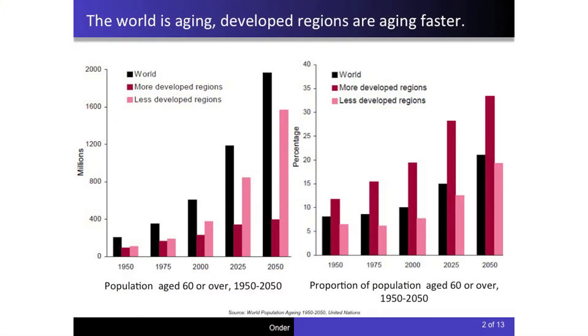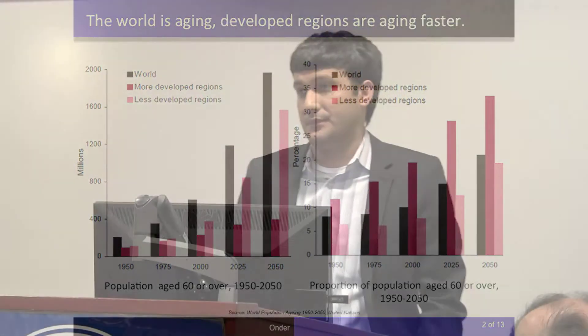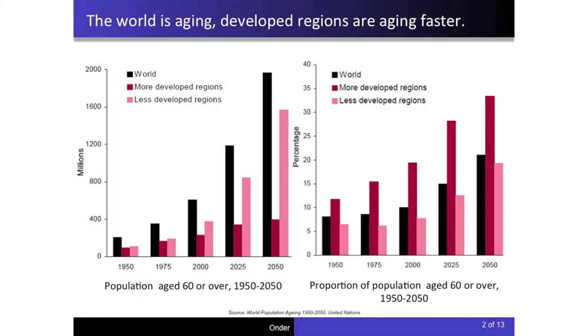Let's have a look at what's going on in the world in terms of population aging. A simple indicator to measure population aging is the size of the population aged 60 or above. The first chart shows that the number of people aged 60 or above will almost triple from 2000 to 2050. Most elderly people will reside in less developed regions, but the second graph shows that the share of the aged population in total population is a more substantial problem for developed countries.